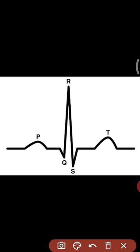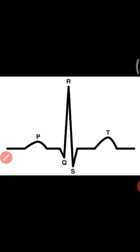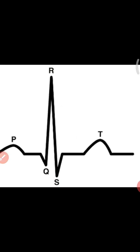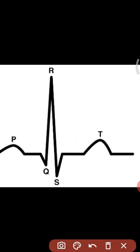The T wave represents repolarization of both ventricles — the left ventricle as well as the right ventricle. The final waveform is the U wave. The U wave is the result of after-potentials in the ventricular muscles. This completes the general ECG waveform of P, Q, R, S, T, and U.